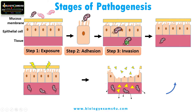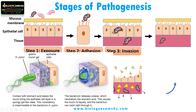Now the pathogen has reached the tissue. Take the case of Helicobacter pylori. Contact with stomach acid gives the mucin lining a spongy gel-like state so that Helicobacter pylori cannot penetrate. So this bacterium releases urease, which neutralizes the stomach acid so that the mucin becomes liquefied and the bacteria can swim through it towards the epithelial cell.